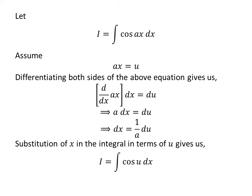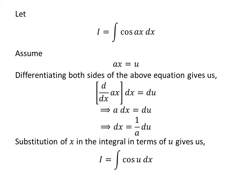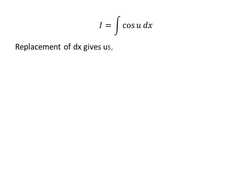Substitution of x in the integral I gives us I is equal to integral of cosine of u. Let us replace differential of x by its value which we had found out earlier, so I is equal to integral of cosine of u upon a with respect to u.